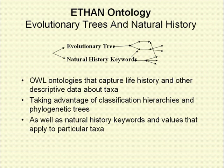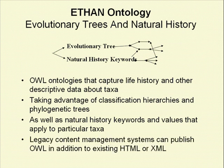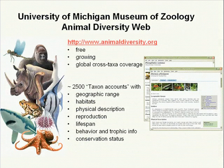Our approach is to take advantage of existing resources, setting up regular transformations of more traditional online databases to semantic web representations. So ETHEN aims to expose structured data from Animal Diversity Web, a large popular online encyclopedia, to intelligent agents in the form of OWL ontologies. There are many similar online databases with basic information about organisms that we expect to be largely compatible with our ontology framework.